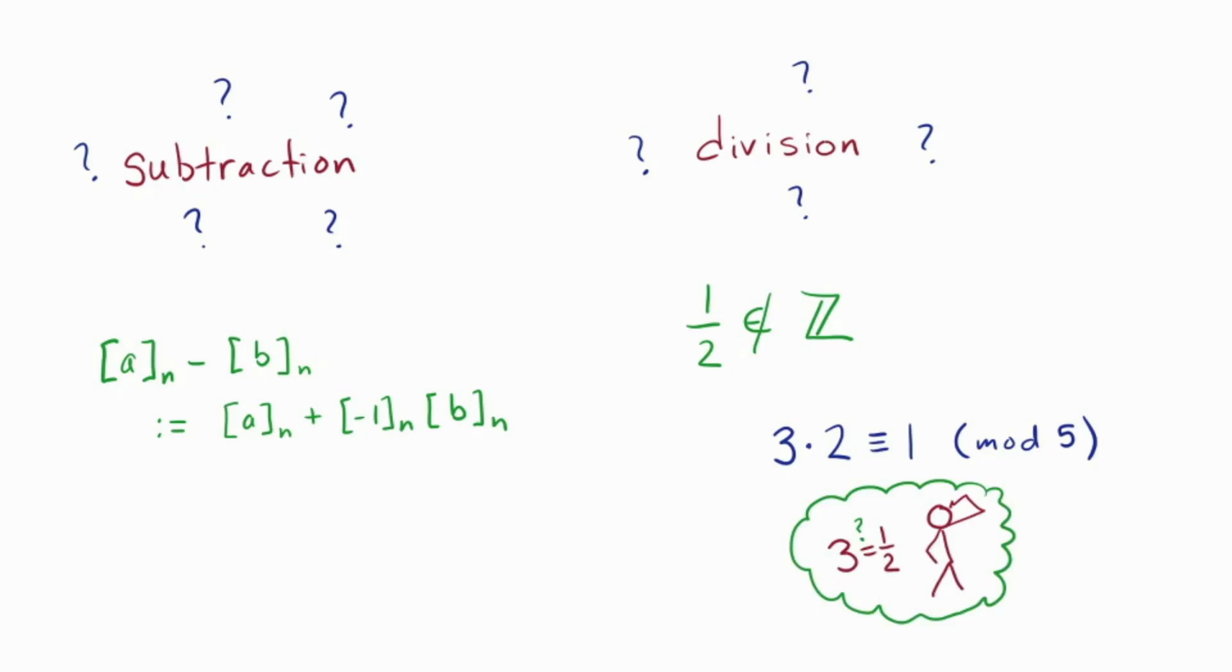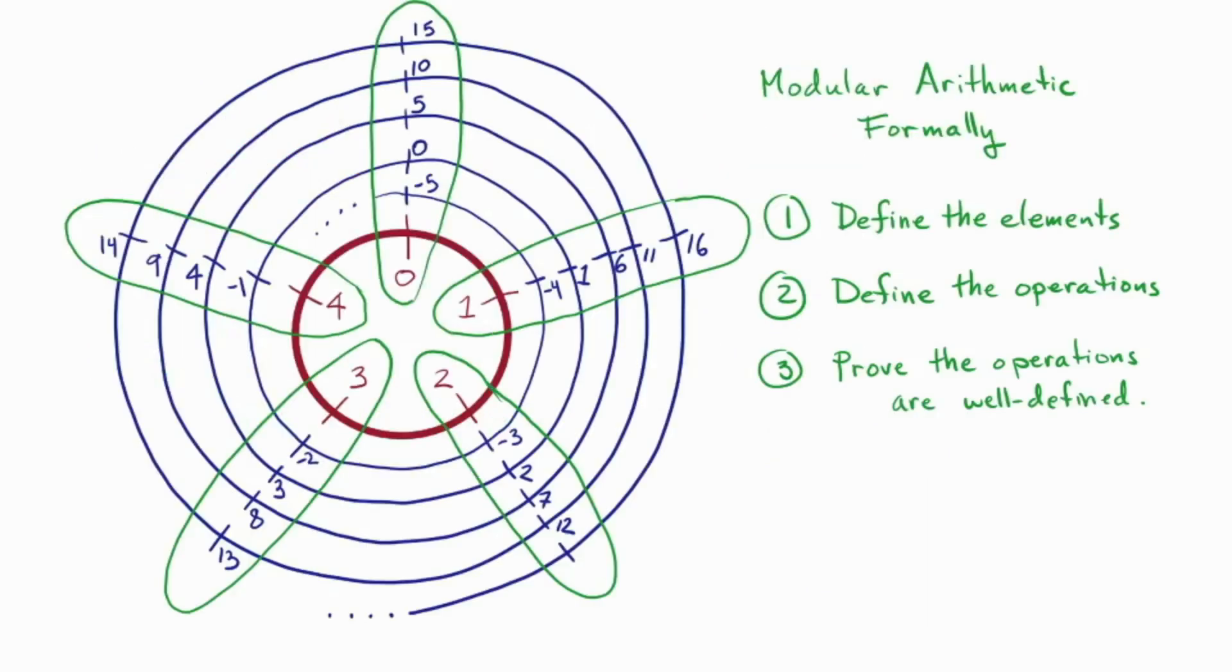Okay, so now we've accomplished step 3. In fact, we've accomplished our three goals for today. We've formally defined the elements of Z mod n Z as equivalence classes under the notion of congruence modulo n. We've formally defined addition and multiplication on these equivalence classes, and we've proven that they are well-defined operations. Let's tie things up with some final thoughts and reflections.